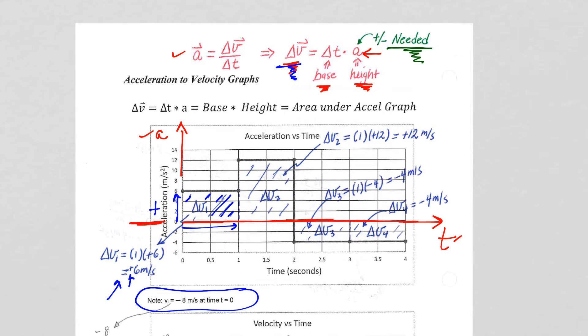because the acceleration is positive above that horizontal zero line. It is negative below the horizontal line, so that's why my delta V3 is going to be negative four.